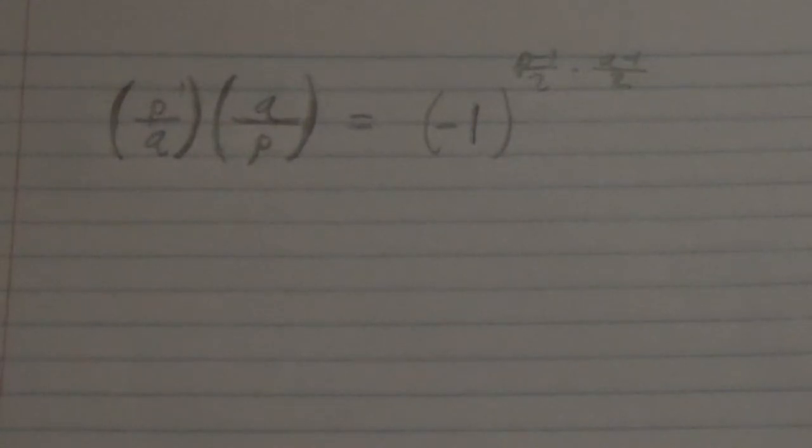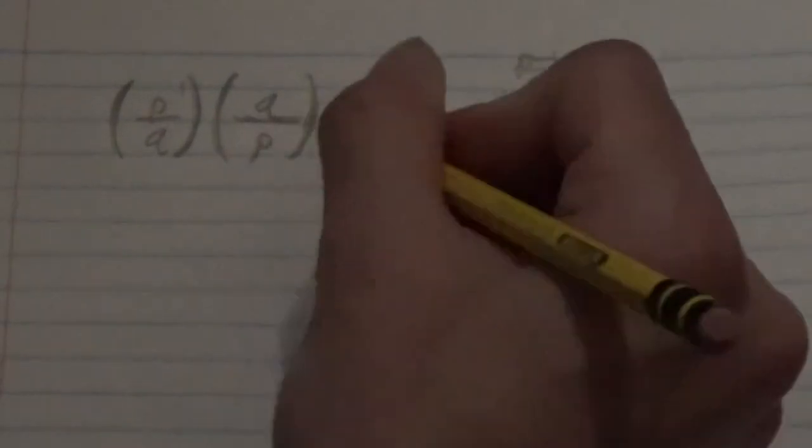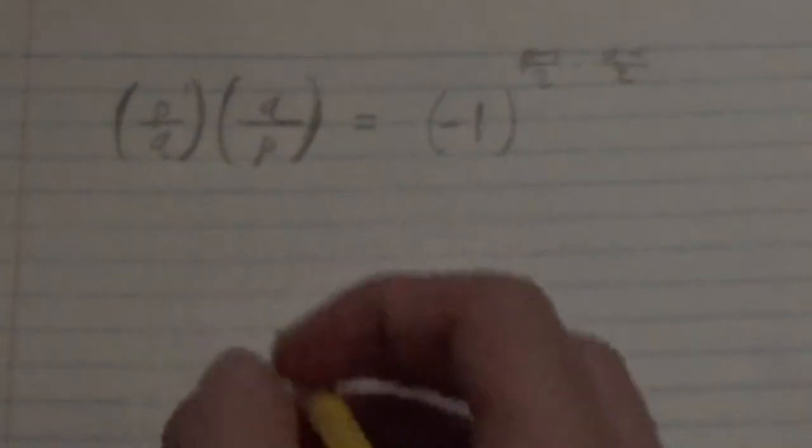Okay. So substituting p and q from what we just saw, what we just logically deduced about 5 and 13, let's see what we get here.